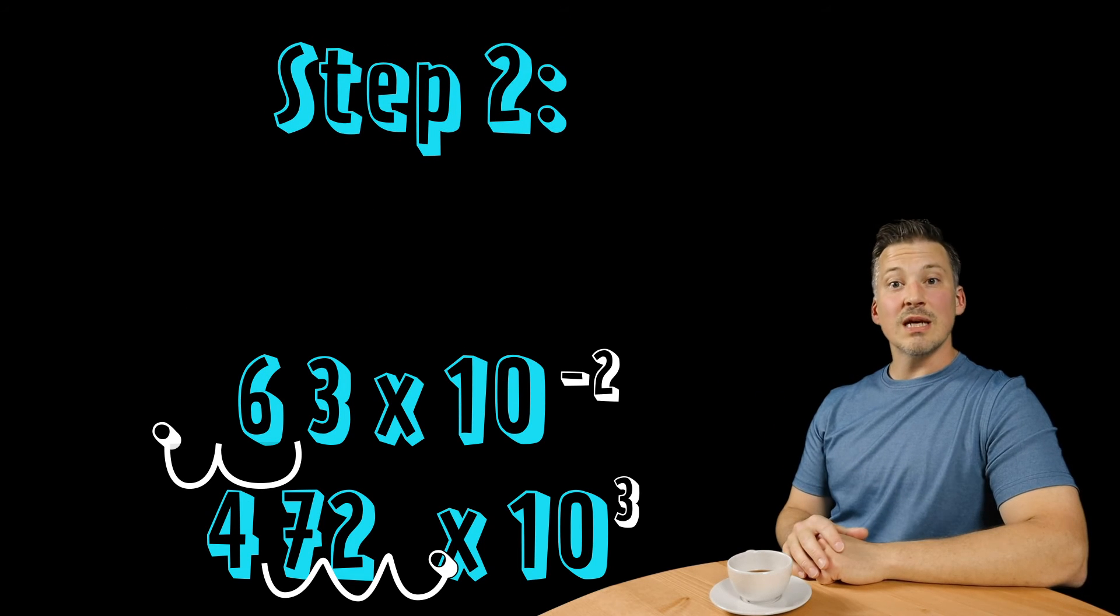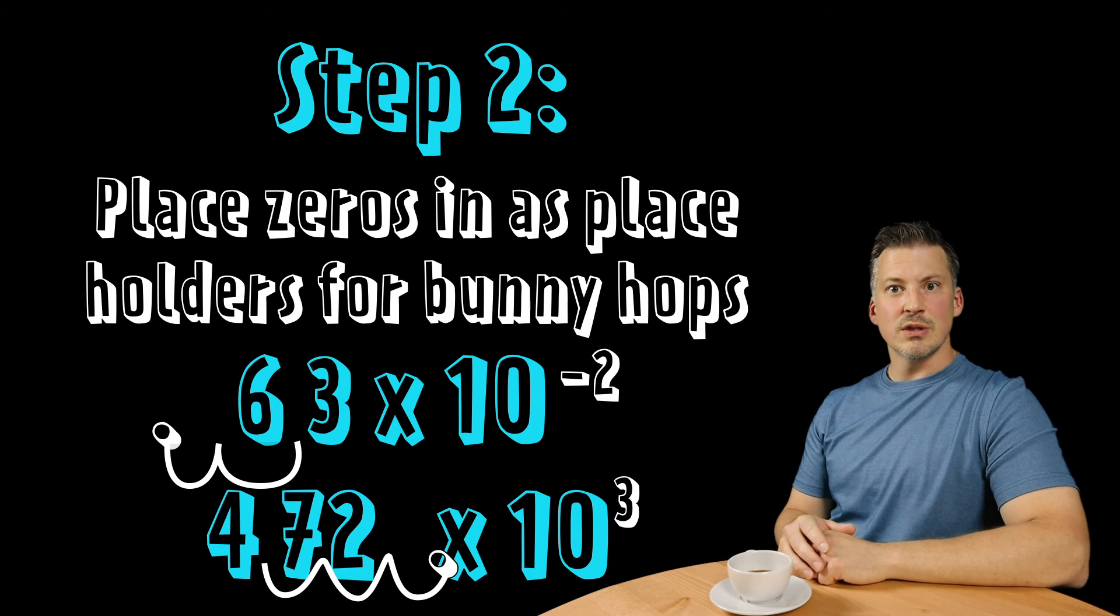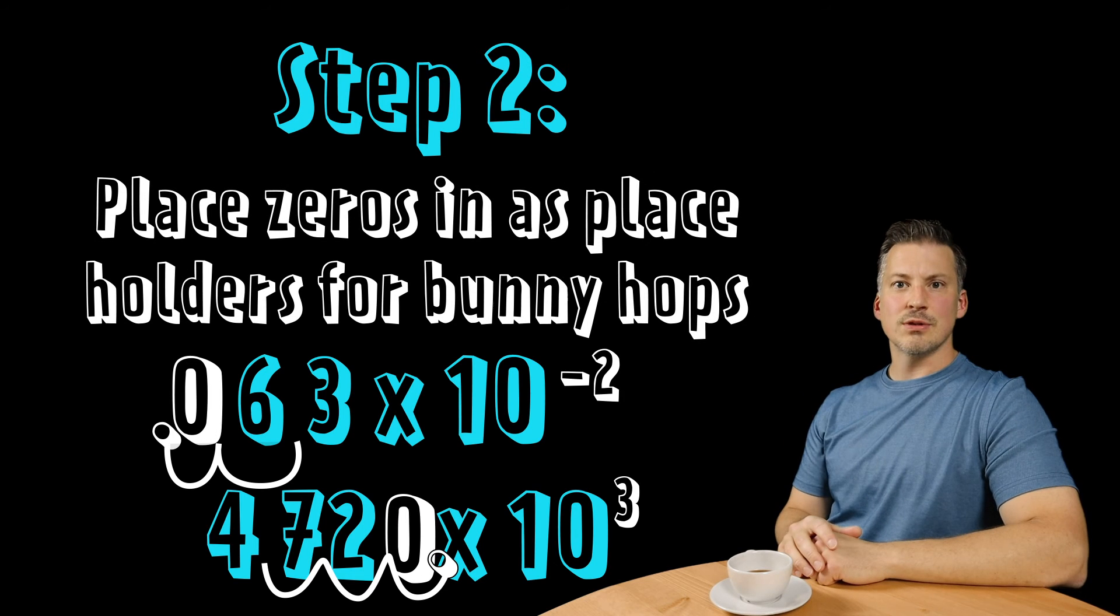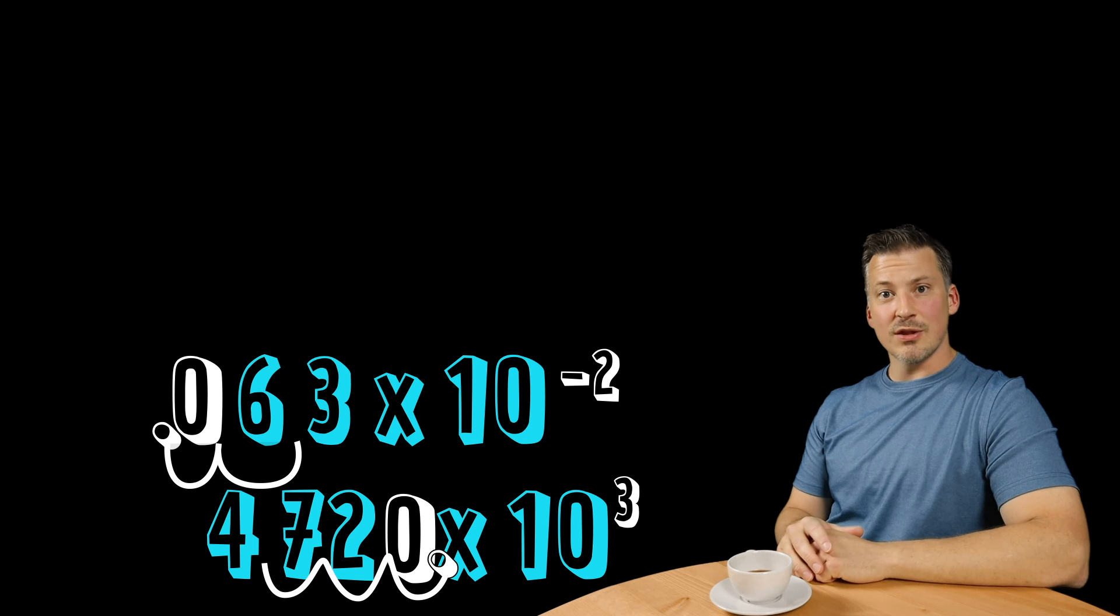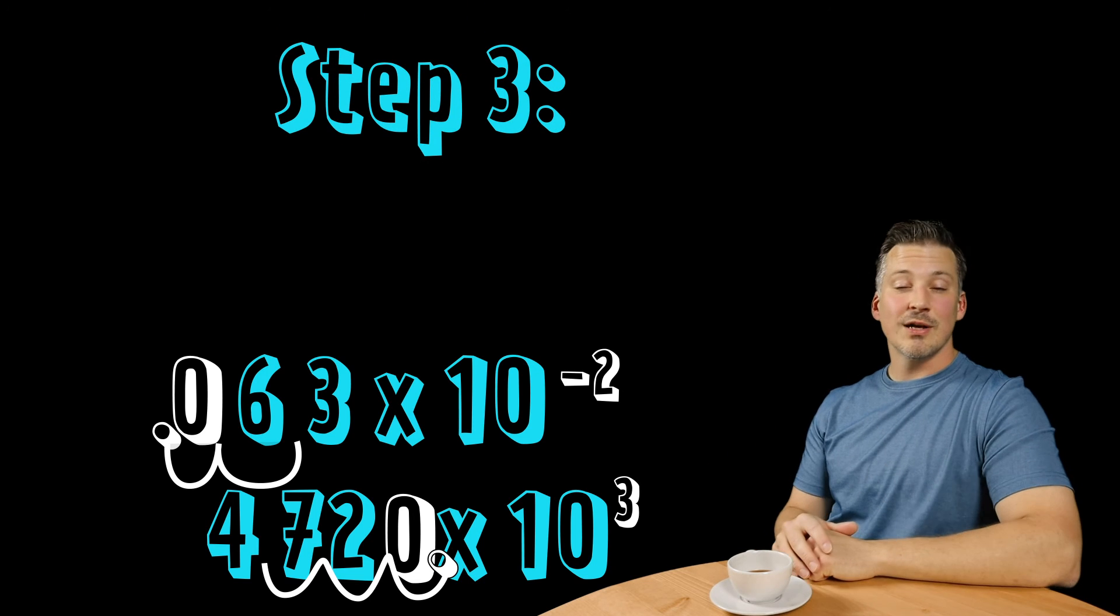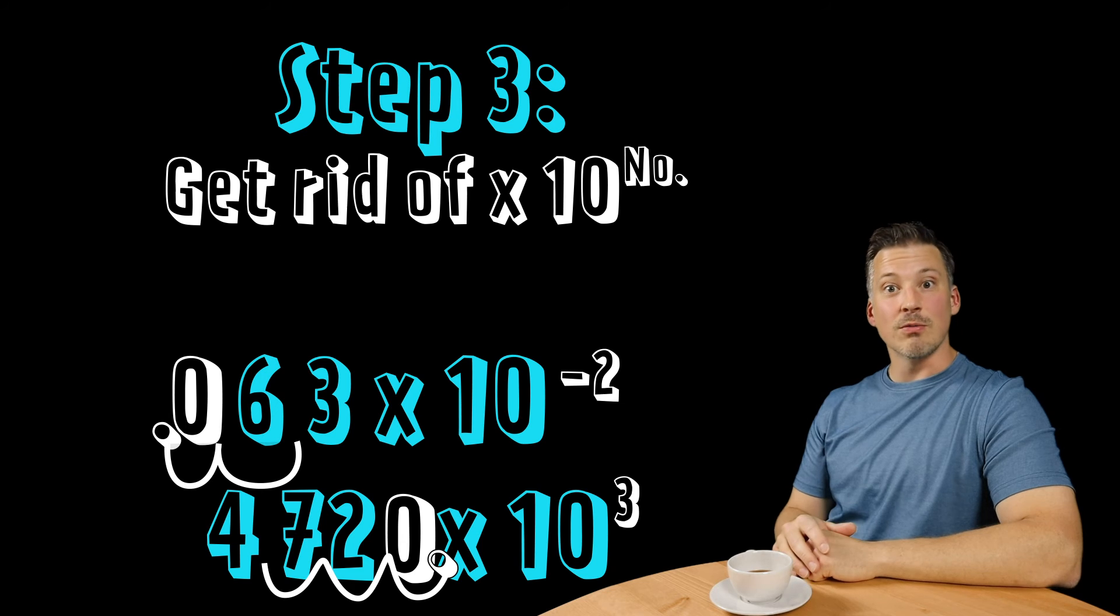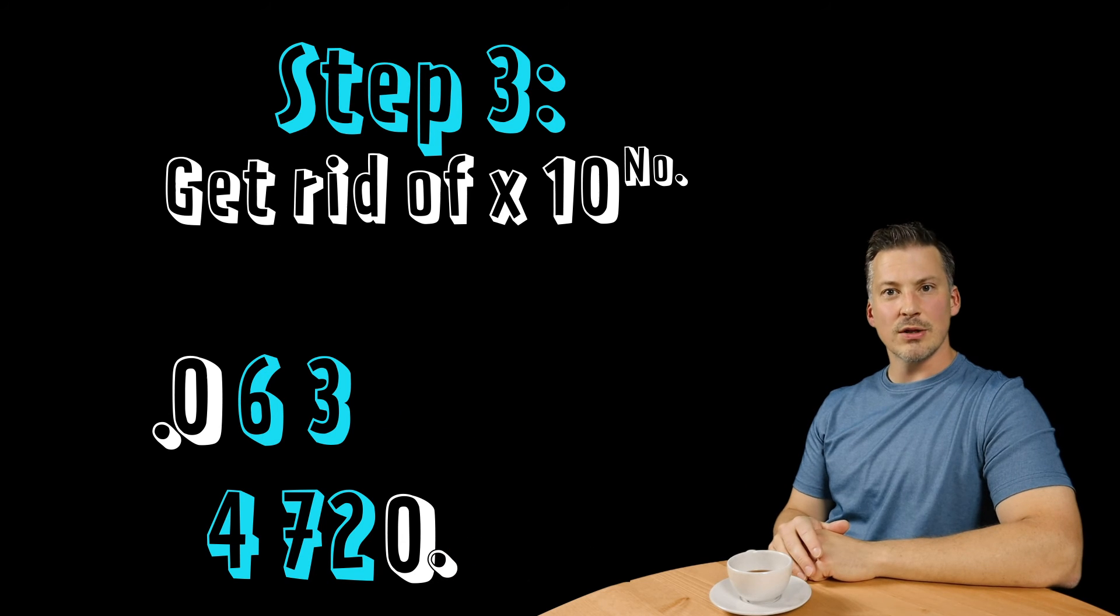After you make those bunny hops, the second step is to place in zeros as placeholders for those bunny hops. And last but not least, the third step: literally just get rid of times 10 raised to whatever the power was. Just bye-bye, see you later.